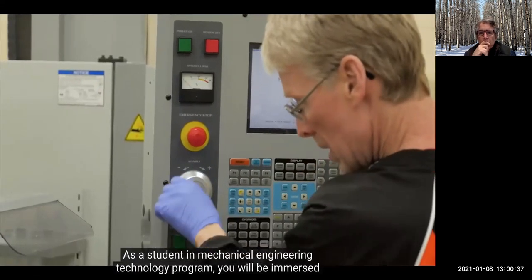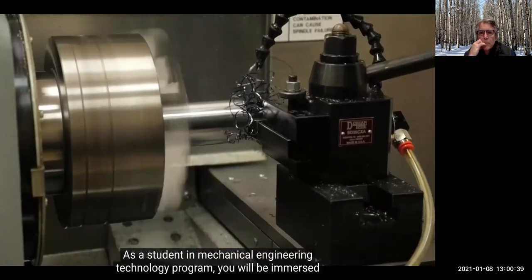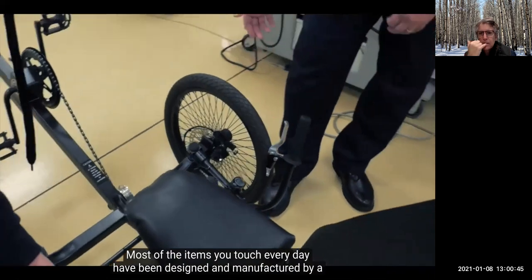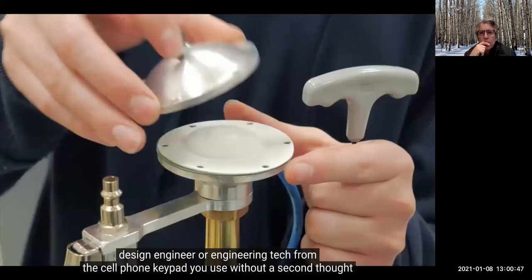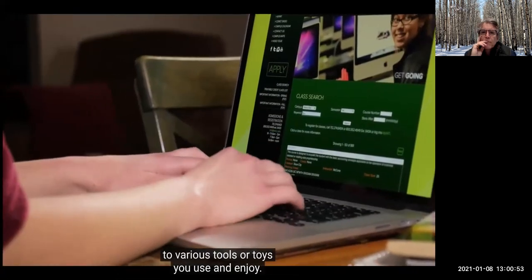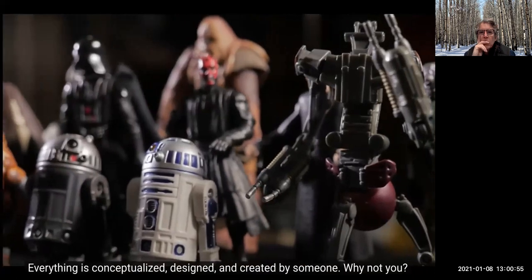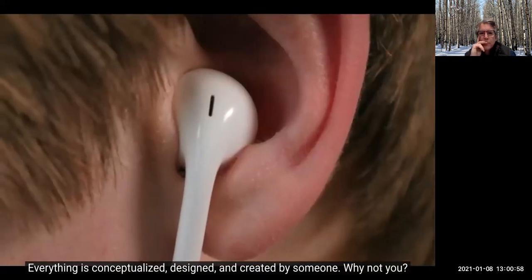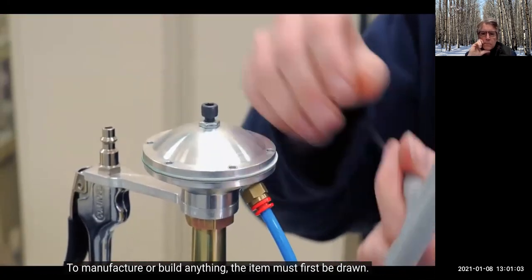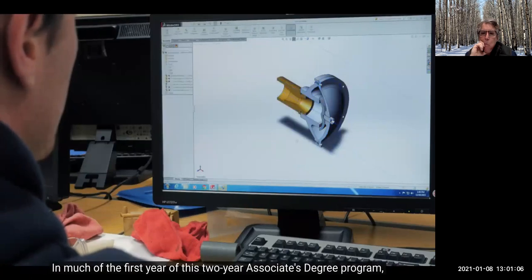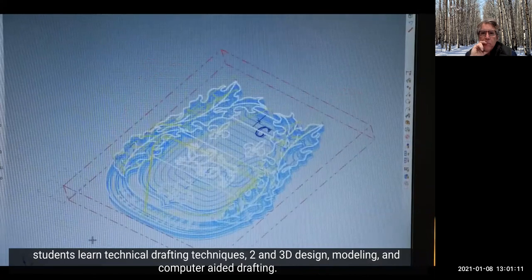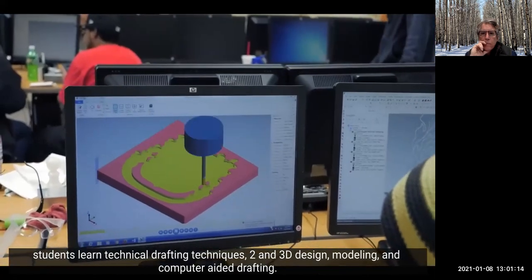As a student in the Mechanical Engineering Technology Program, you will be immersed in a world limited only by your imagination. Most of the items you touch every day have been designed and manufactured by a design engineer or engineering tech. From the cell phone keypad you use without a second thought to various tools or toys you use and enjoy, everything is conceptualized, designed, and created by someone. Why not you? To manufacture or build anything, the item must first be drawn. In much of the first year of this two-year associate's degree program, students learn technical drafting techniques, 2D and 3D design, modeling, and computer-aided drafting.